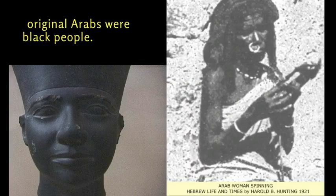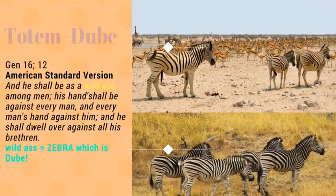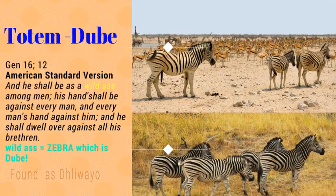Number two: the original Arabs were Black Africans and their totem was Ut-Duhube, and most of them are found within the Hliwayo tribe.